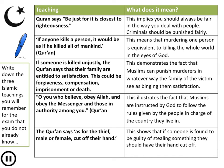If someone is killed unjustly, the Quran says their family are entitled to satisfaction — this could be forgiveness, compensation, imprisonment or death. This demonstrates that Muslims can punish murderers in whatever way the family of the victim sees as bringing them satisfaction. It could mean the death penalty is justified, or that using prison to punish murderers would be a better option.